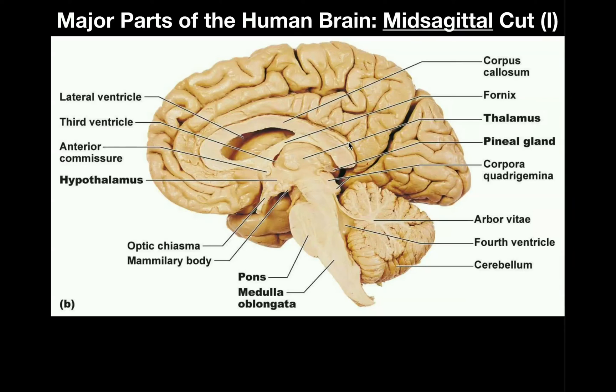Before we go any further, I want to talk about how we identify which is the front part of the brain and the back — that is, anterior and posterior. To do that, let's talk about two large structures.